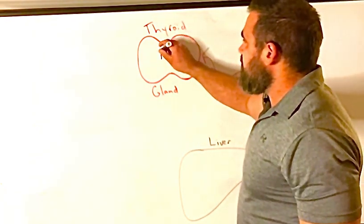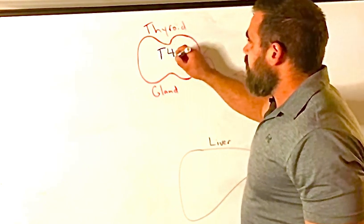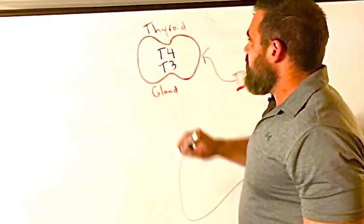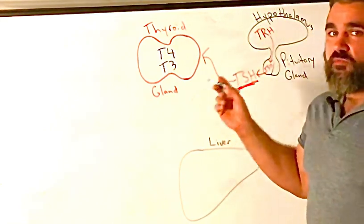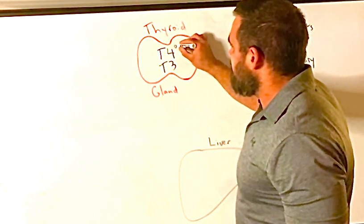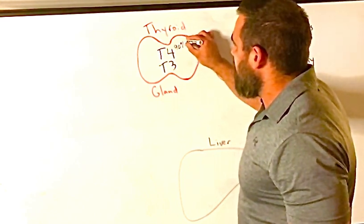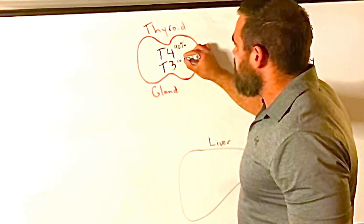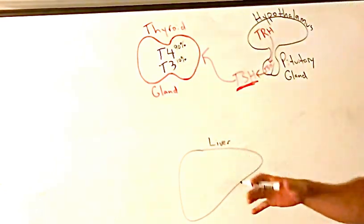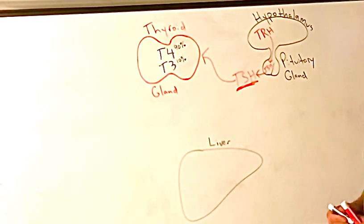So TSH is going to stimulate the thyroid. There's two thyroid hormones: T4 and T3. The thyroid gland makes mostly T4, so you could say 80 to 90% T4, and about 10 to 20% T3. You don't need to know those exact numbers, but at least know it's making more T4 than T3.